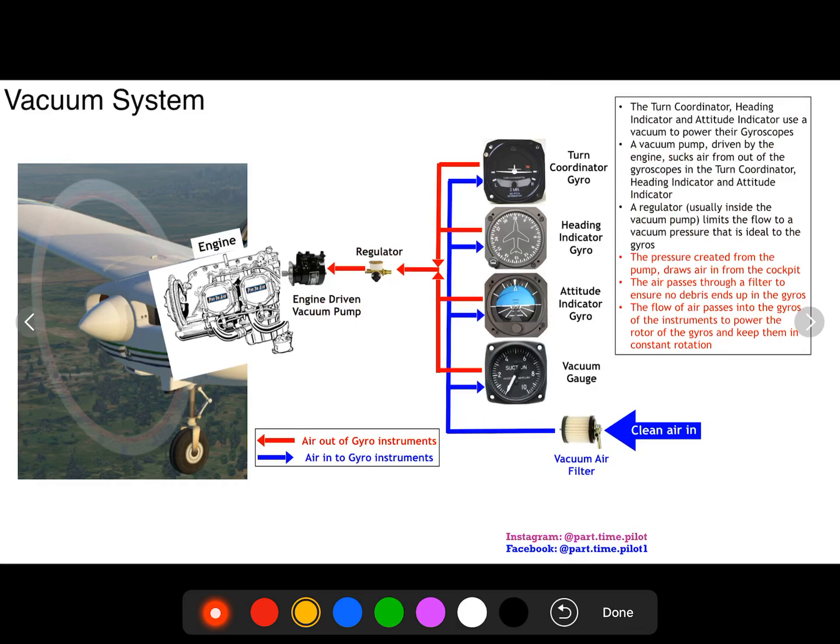Now where does the air come from? So the pump again is pumping from here. The air starts somewhere where there's clean air, usually the cabin. So over here we got the cabin, you're gonna have an air inlet. So you get clean air in that goes through a vacuum filter.